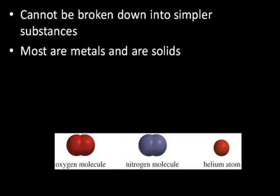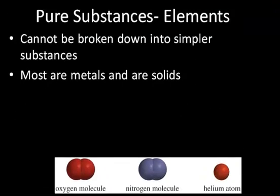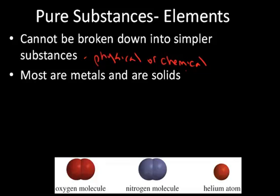Elements cannot be broken down into simpler substances by physical or chemical means. Most of the known elements are metals, existing at room temperature and pressure as solids. Some examples include molecular oxygen, molecular nitrogen, and the helium atom — all of which exist as gases at room temperature and pressure.